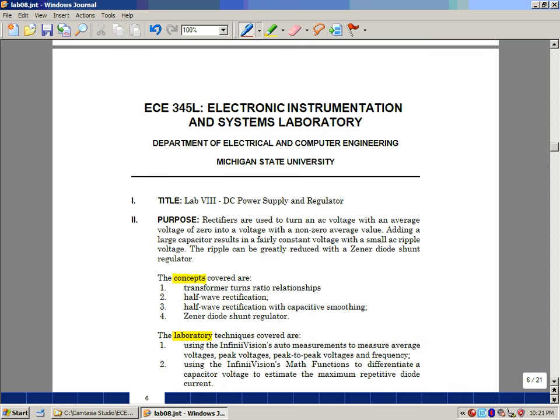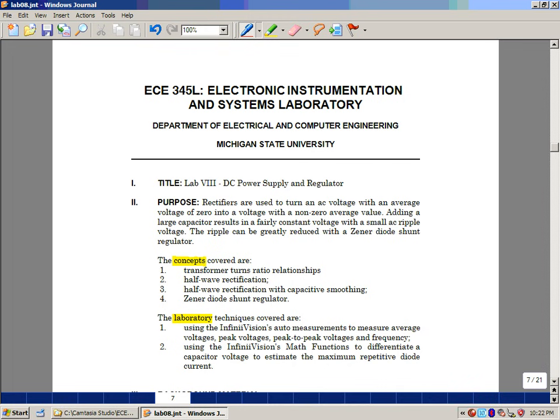In this lab, we'll take a look at rectifiers, which turn an AC voltage with an average value of zero into a voltage with a non-zero average value. We're going to add a capacitor to smooth out some of this variation. Then we'll take a look at further reduction of ripple with a zener diode. The concepts that we covered were transformer turns ratio, half-wave rectification, half-wave rectification with a smoothing capacitor, and a zener diode shunt regulator.